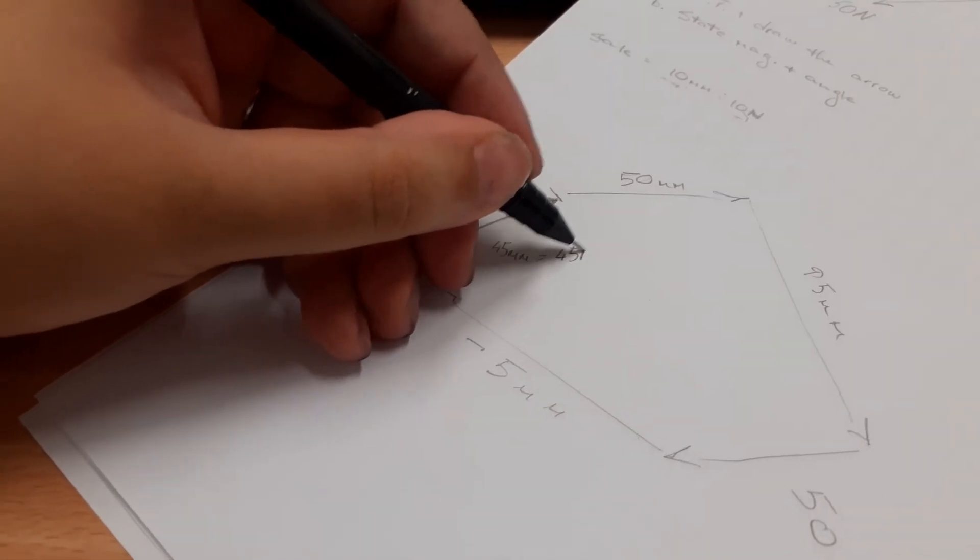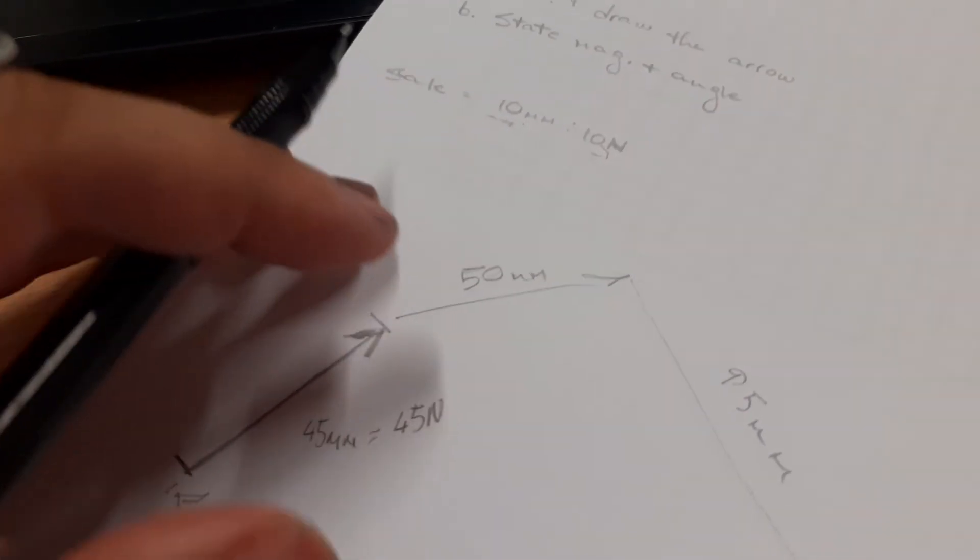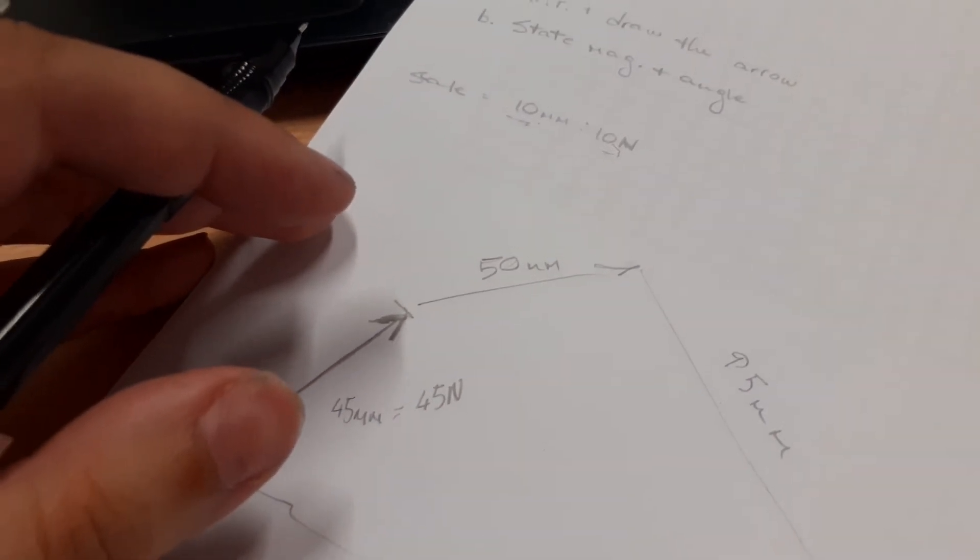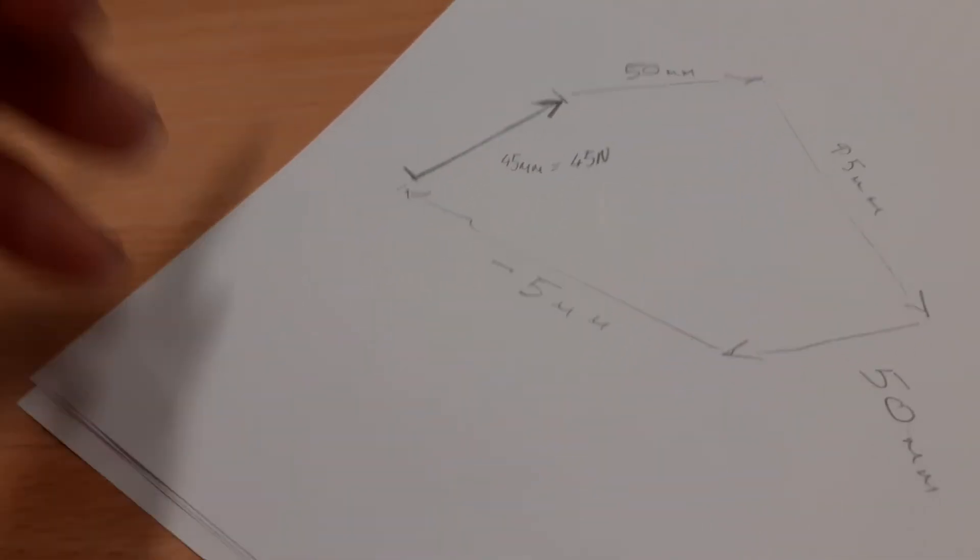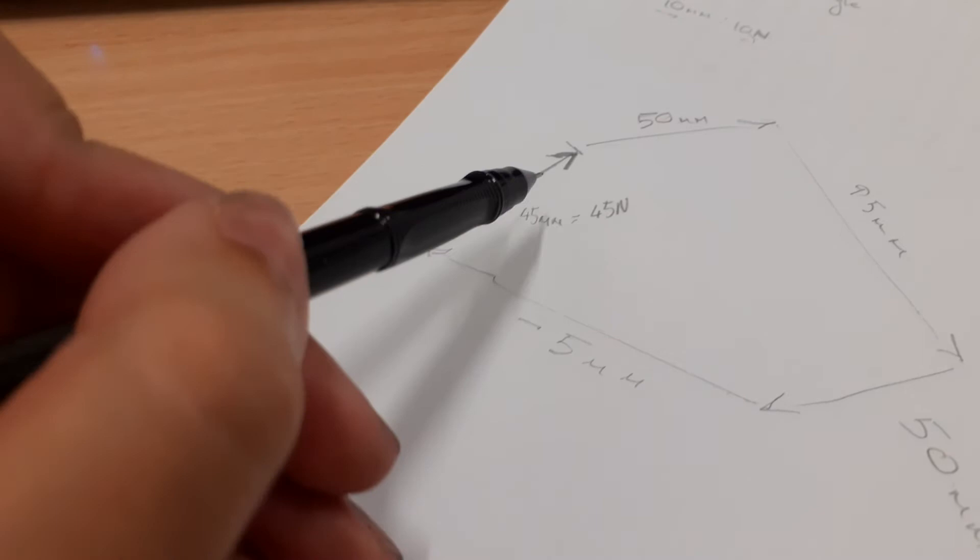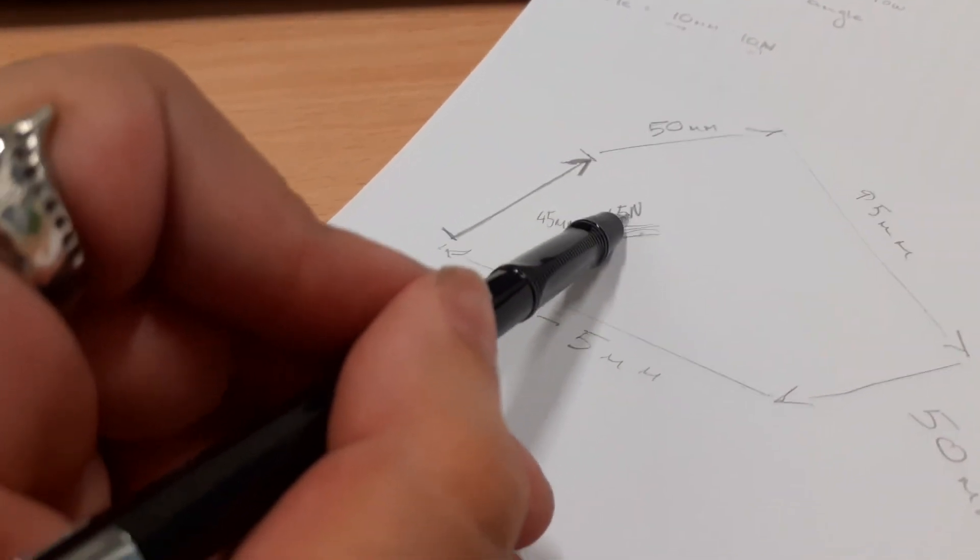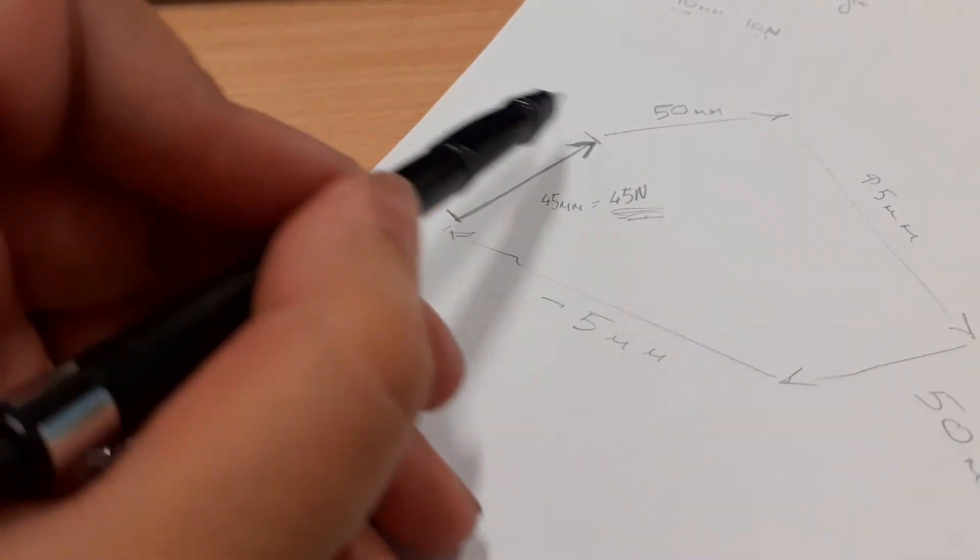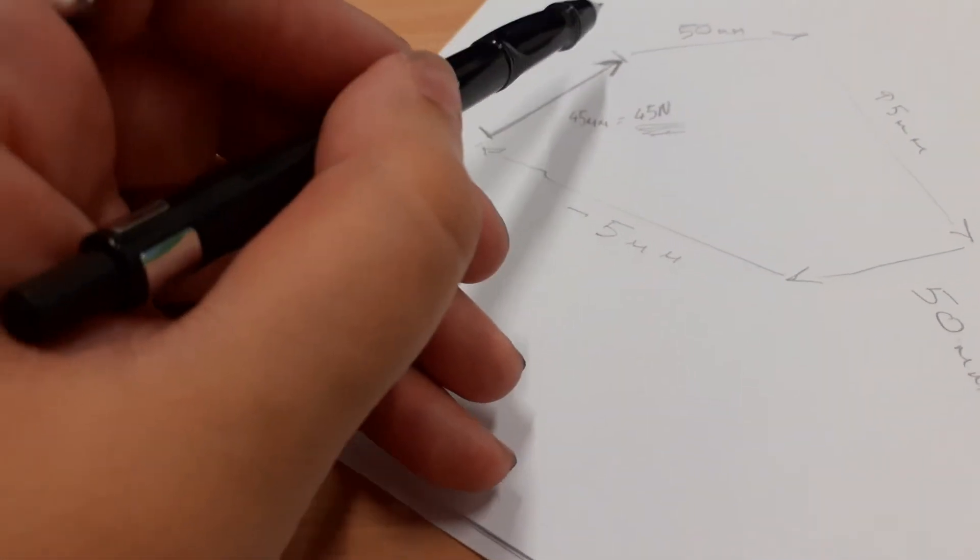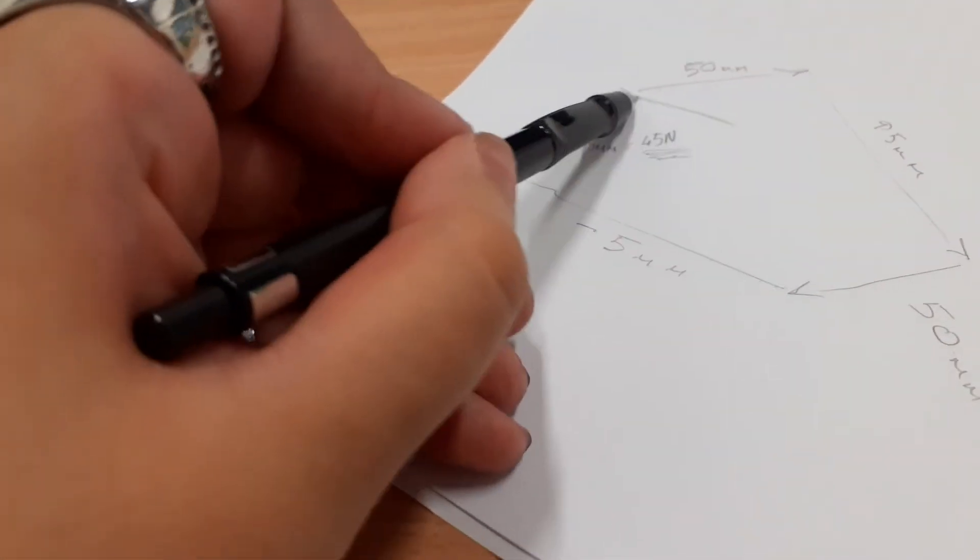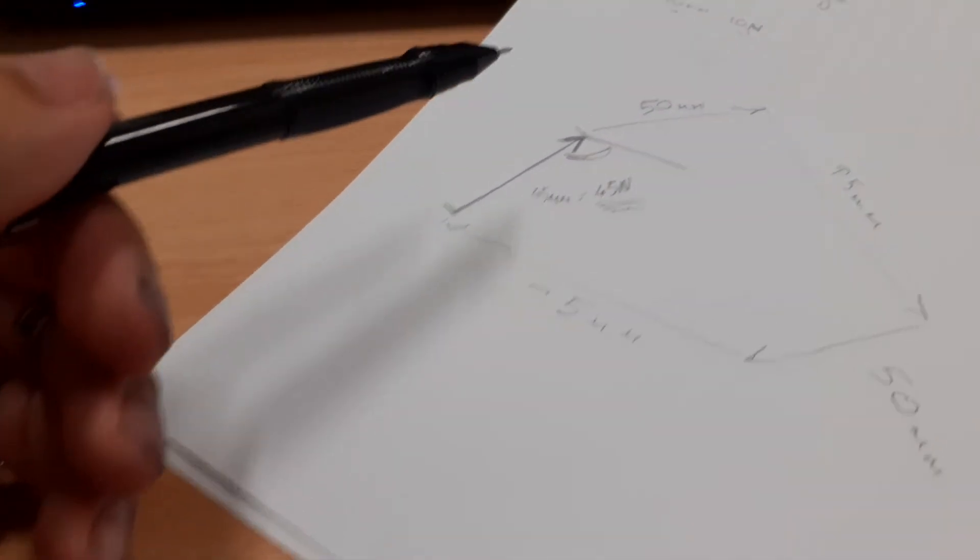Now question B, state the magnitude and angle of the horizontal plane. What he has to do is simply state this answer. That's the magnitude, this is the magnitude and the direction and the angle.